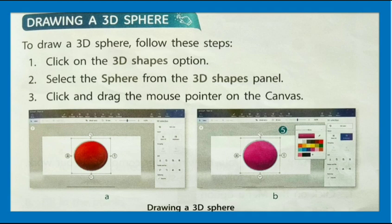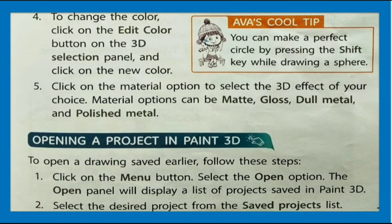Drawing a 3D square: To draw a 3D square, follow these steps. Click on the 3D Shapes option and select the Sphere from the 3D Shapes panel. Click and drag the mouse pointer on the canvas. To change the color, click on the Edit Color button on the 3D Selection panel and click on the new color. Click on the Material option to select the 3D effect — material options can be Matte, Gloss, Dull Metal, and Polished Metal. Cool tip: you can make a perfect circle by pressing the Shift key while drawing a sphere.